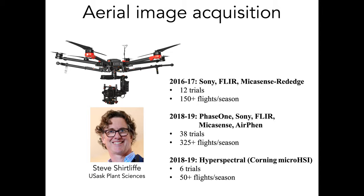The main type of image data we're collecting at the research center is aerial imaging with UAVs or drones. The imaging work is led by Steve Shurtleff in plant sciences here, and his large team has been collecting large amounts of imaging data from many plant breeding and research trials over four years. They use a variety of sensors on different drone platforms: primarily high-resolution RGB Sony cameras, a 100-megapixel Phase One camera, a FLIR thermal camera, and two types of multispectral cameras — the MicaSense RedEdge and the Airfin camera.